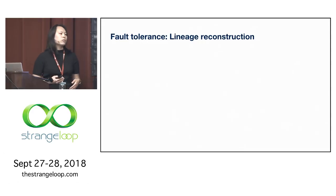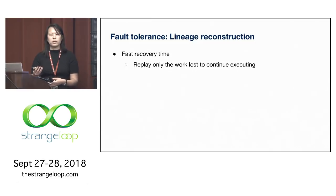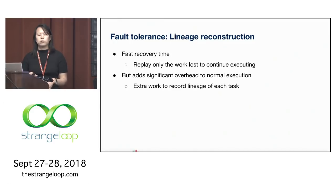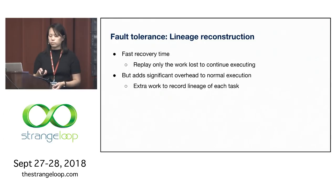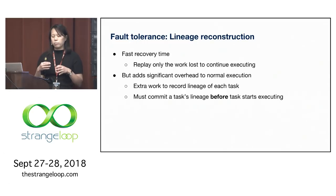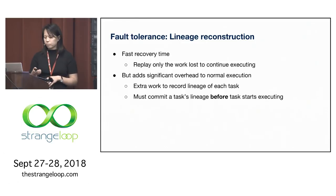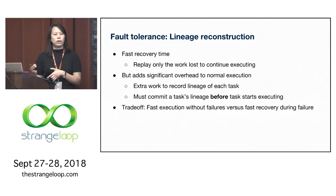What's really nice about lineage-based fault tolerance is that recovery can be fast—you only replay the work that was actually lost. On the other hand, this adds overhead to normal execution because you have to record the lineage of each task to the global control store, and you must commit that lineage before the task starts executing. This is a key tradeoff in systems design: fast execution when there are no failures versus fast recovery when there is a failure.